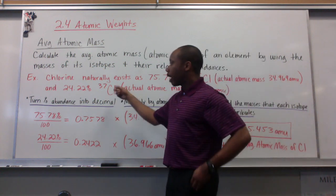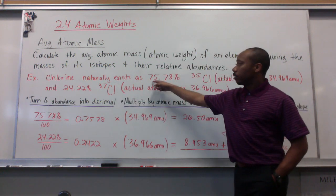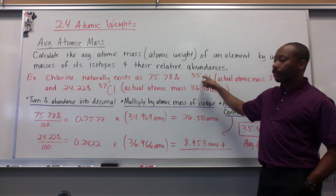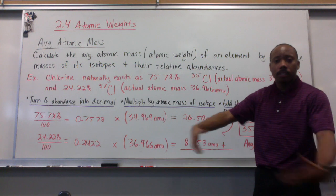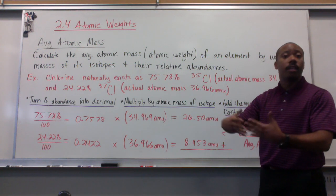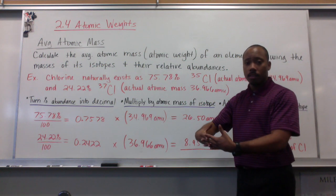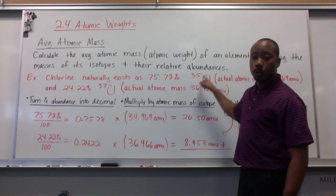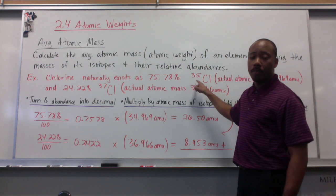For example, chlorine naturally exists as 75.78% chlorine-35. So if I picked up a sample of chlorine, the element, 75.78% of it will be chlorine-35. So chlorine atoms with a mass number of 35.